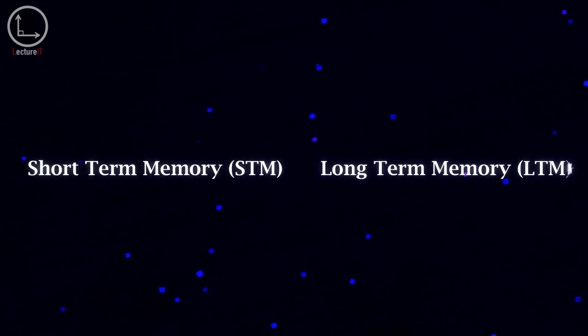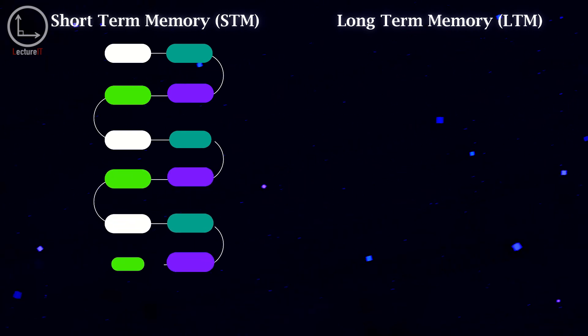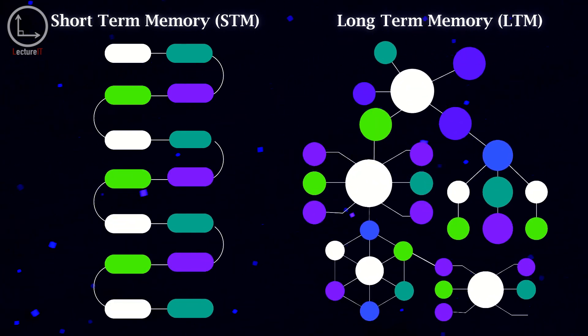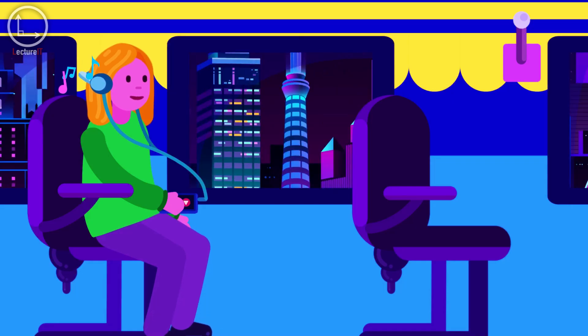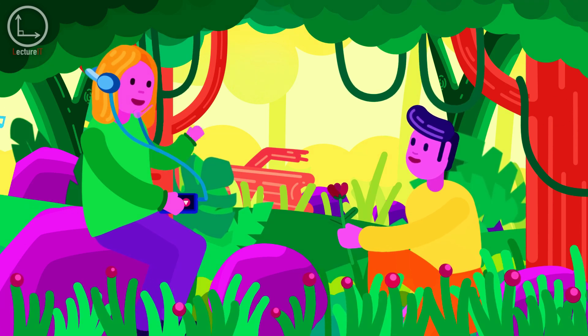Short-term memory and long-term memory also differ in their retrieval processes. Short-term memory relies on the sequential order of events, while long-term memory often depends on associations. For example, hearing a song from your past can evoke vivid memories tied to that music.